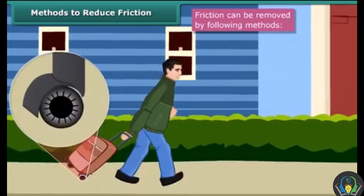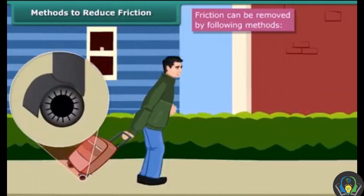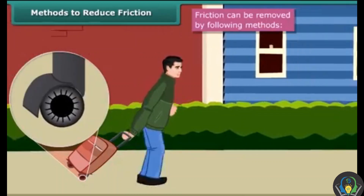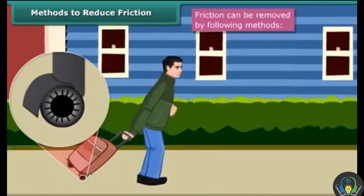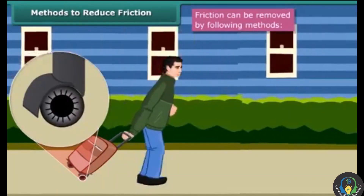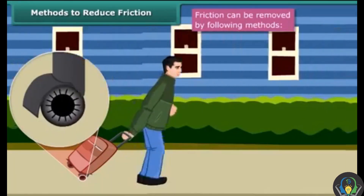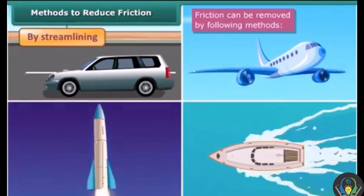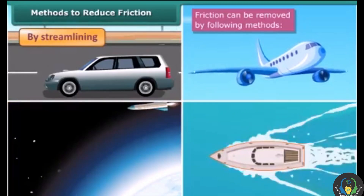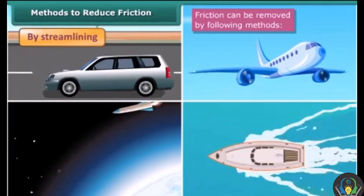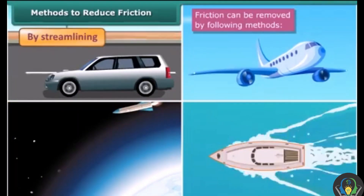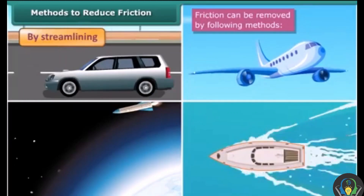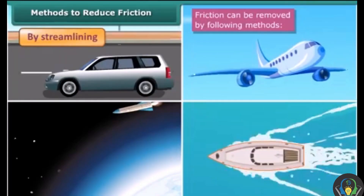By using rollers and wheels: many heavy objects like big suitcases are provided with small wheels called rollers to reduce friction. By streamlining: the bodies of cars, aeroplanes, and even rockets are streamlined to reduce air friction. The bodies of boats and ships are also streamlined to reduce the friction of water.